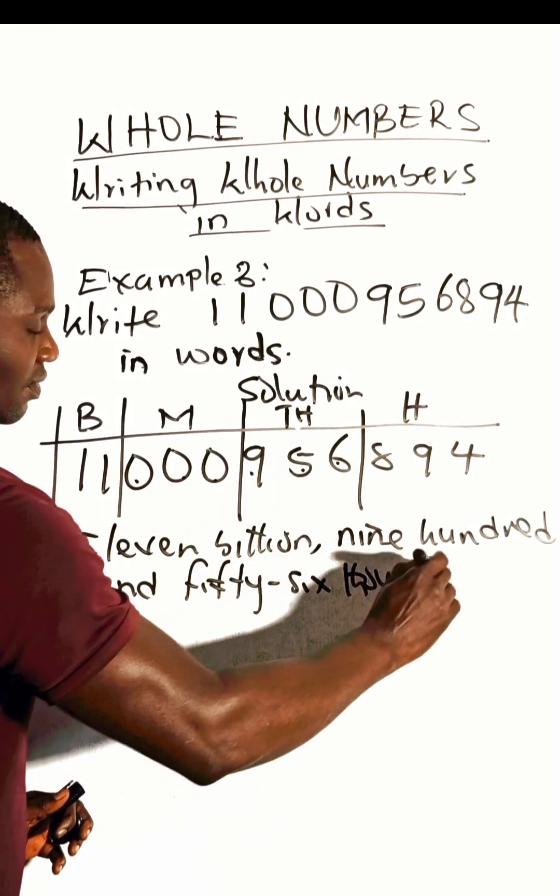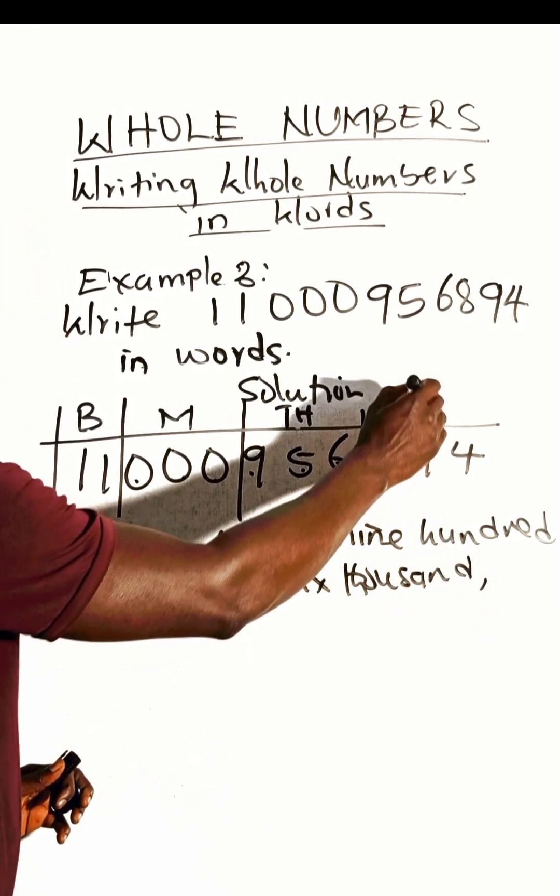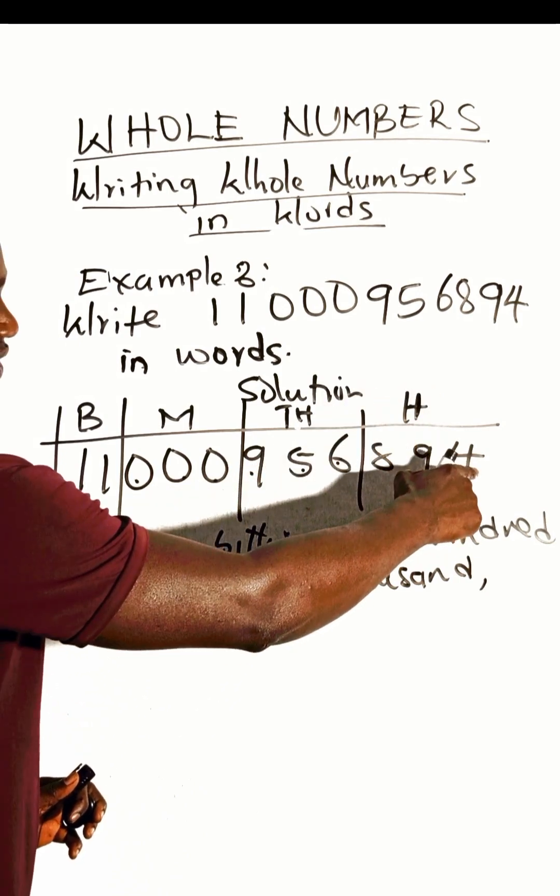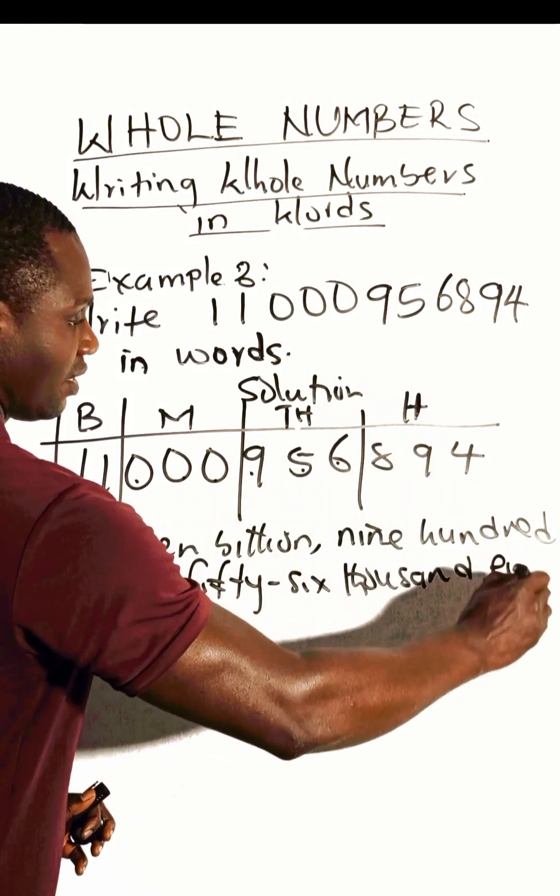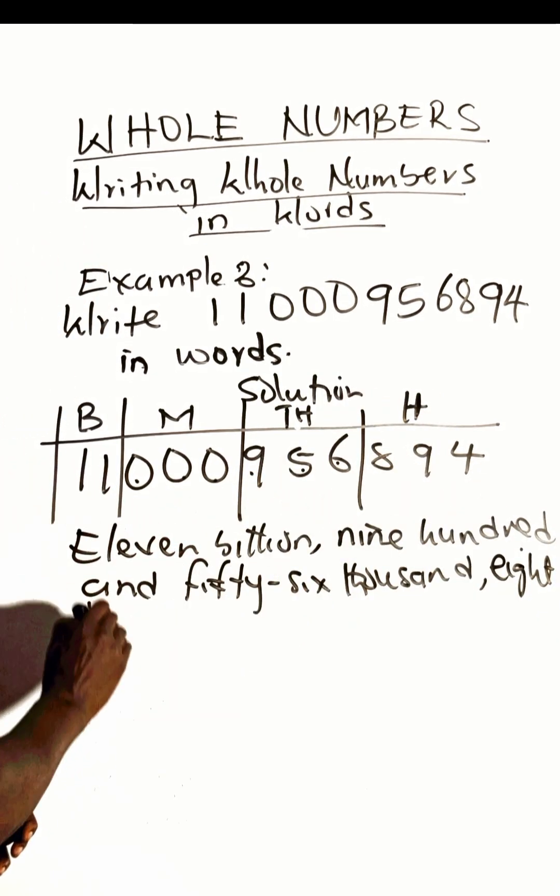And finally your hundred group: we have eight hundred and ninety-four. So write eight hundred and ninety-four. This is the number in words.